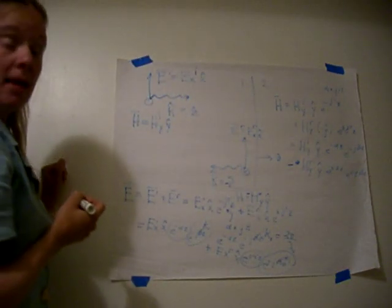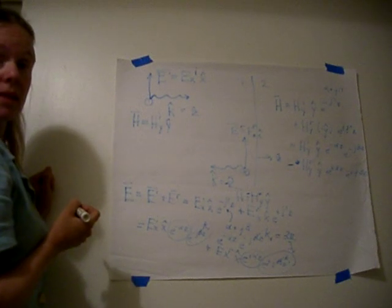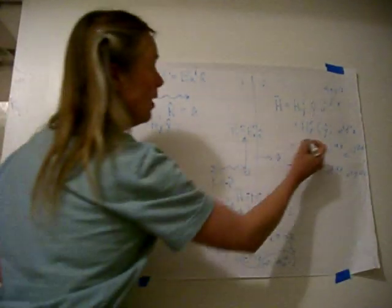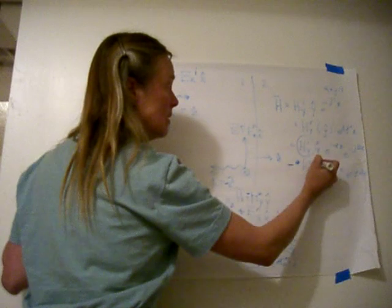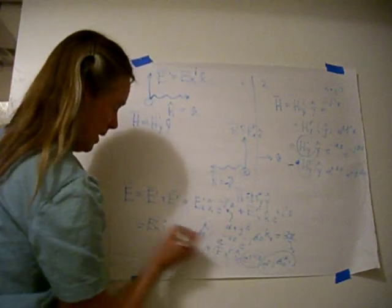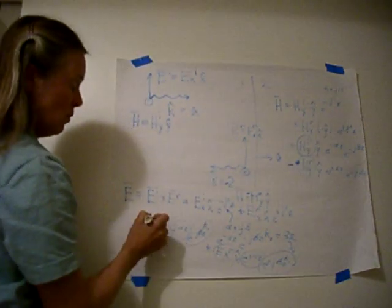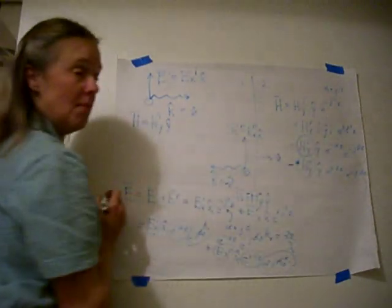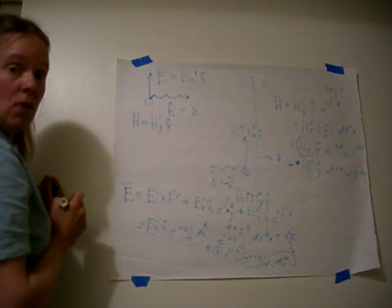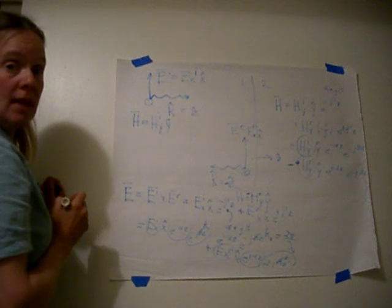Now there are two magnitudes that we don't know in this relationship. One of them is the incident and reflected field, like this. And another is the relationship between the electric and the magnetic fields. So the next thing we're going to do is evaluate those magnitudes.